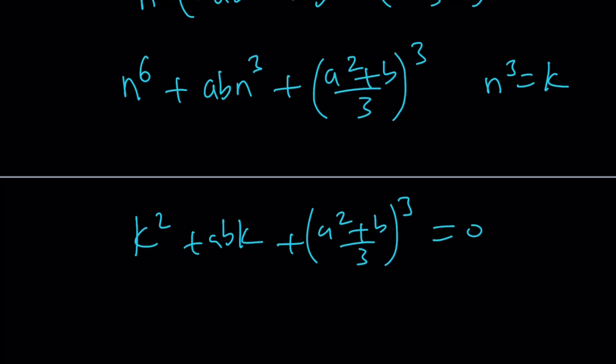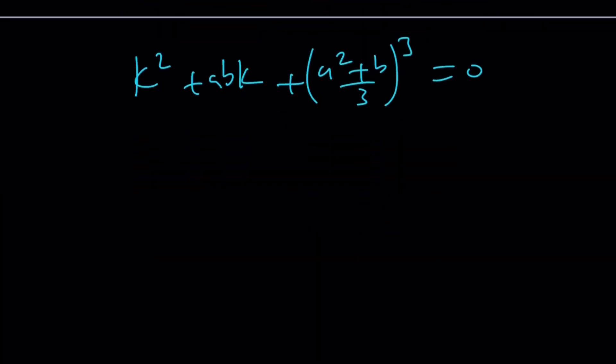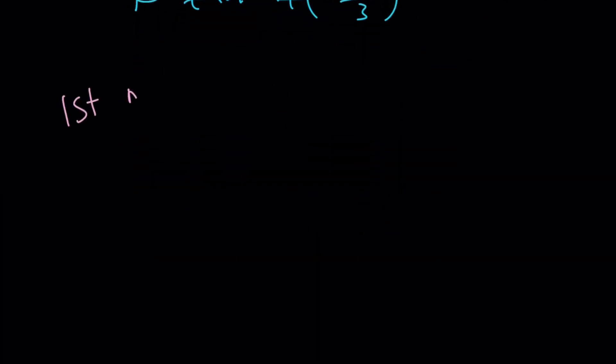And this is a quadratic. You can use the quadratic formula and then find the value of K, which is N³, and then cube root it. Take the conjugates, add them up, and good luck with that. So let me go ahead and present my first method. This is just too painful. But yes, it can be done. It's doable. It's not super bad, actually.